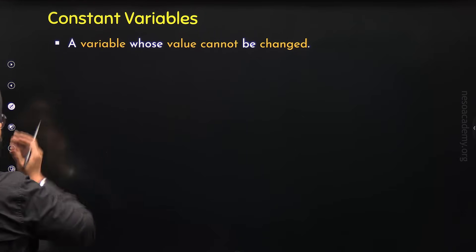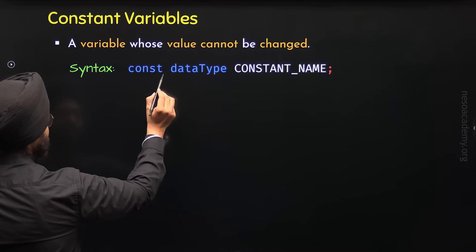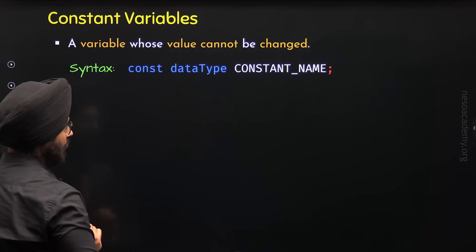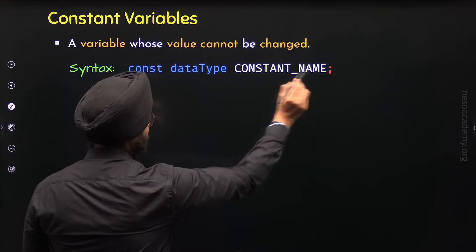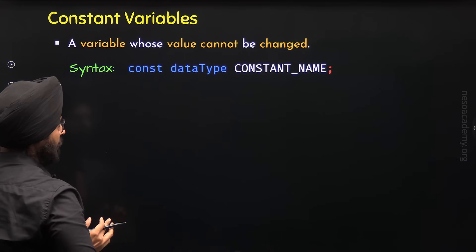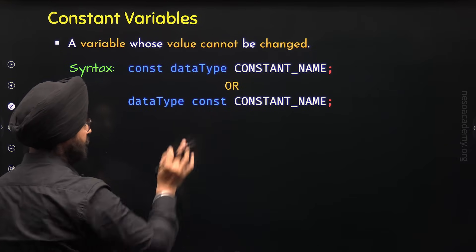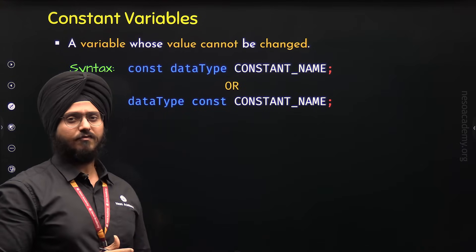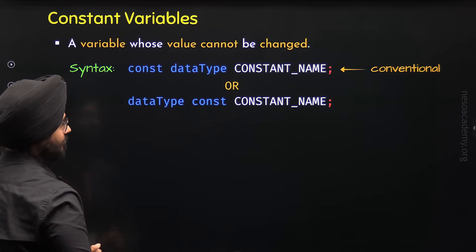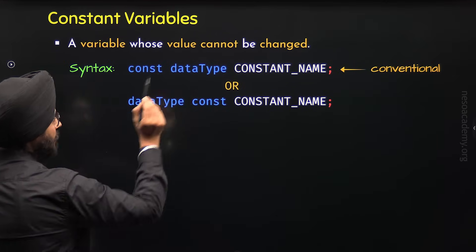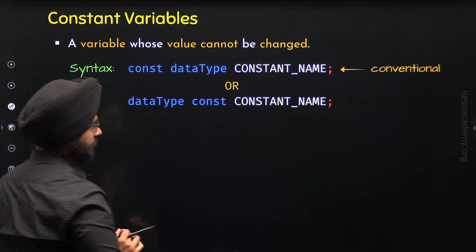Now let's see the syntax of a constant variable. First, we specify the const keyword, then after a space we provide the data type of the constant variable, then the constant name, and finally we end the statement with a semicolon. There is also an alternative way where the const keyword comes after the data type, but this is not the recommended way. The conventional way is: const keyword first, then the data type, then the name of the constant.